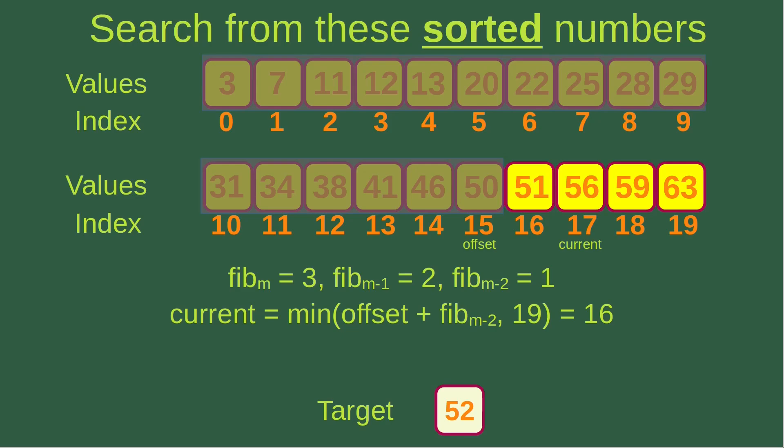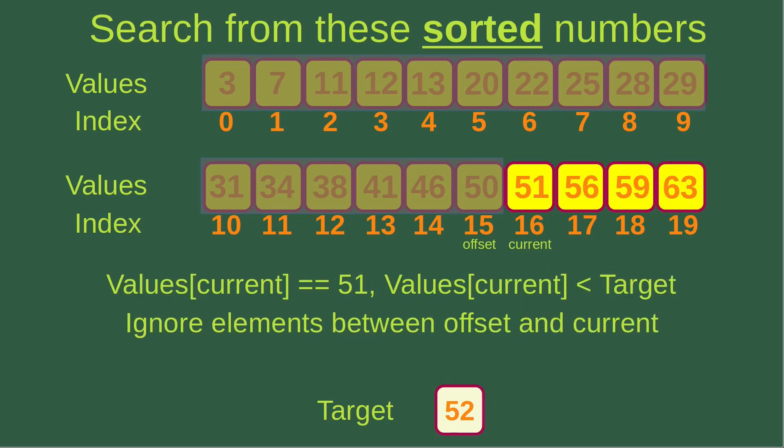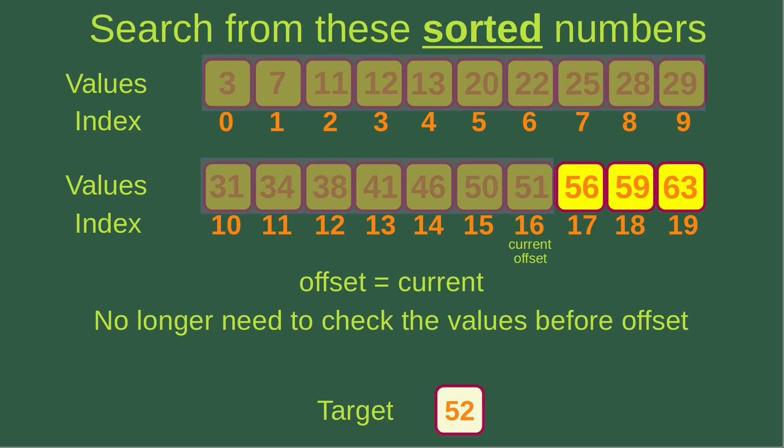The current index of 16 gives me a value of 51, which is smaller than the target 52. I ignore elements between offset and current by making the offset equal to the current. More numbers are grayed out, and I no longer need to check values before the offset.